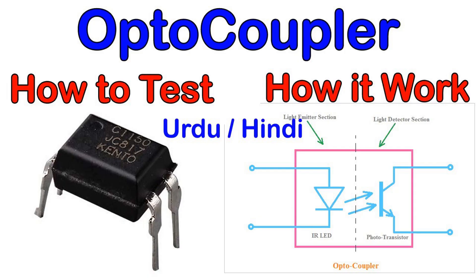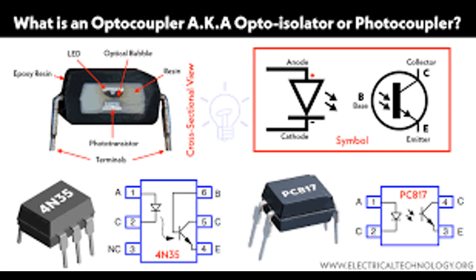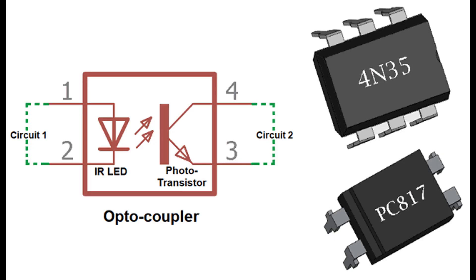Optocouplers are commonly used in situations where it's essential to protect sensitive or low-voltage components from higher voltage or noisy environments — for example, in industrial control systems, medical devices, and automotive electronics. The isolation provided by optocouplers is often referred to as galvanic isolation, which ensures there is no direct metallic path between the input and output sections, preventing the flow of electrical currents or potential differences that could cause damage or interference. The optical barrier plays a crucial role in achieving this electrical isolation while allowing signal transmission through light.